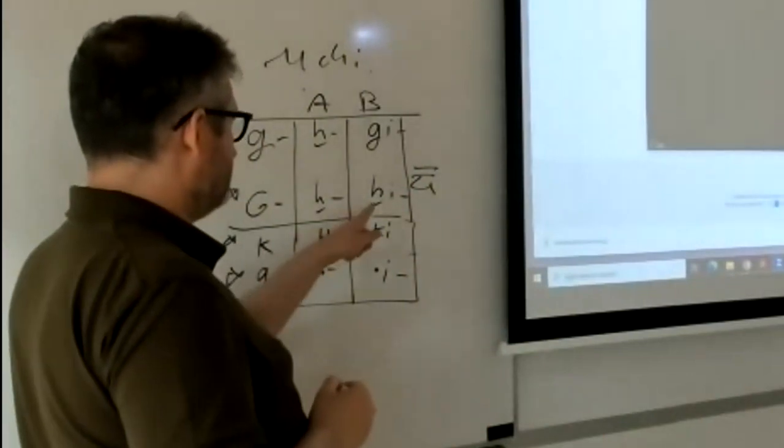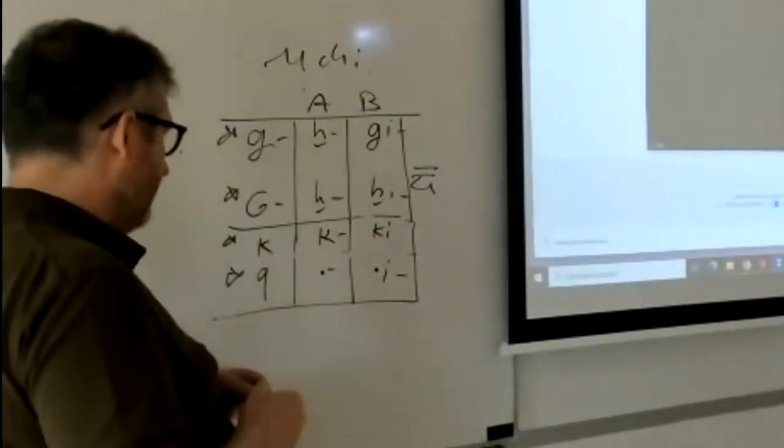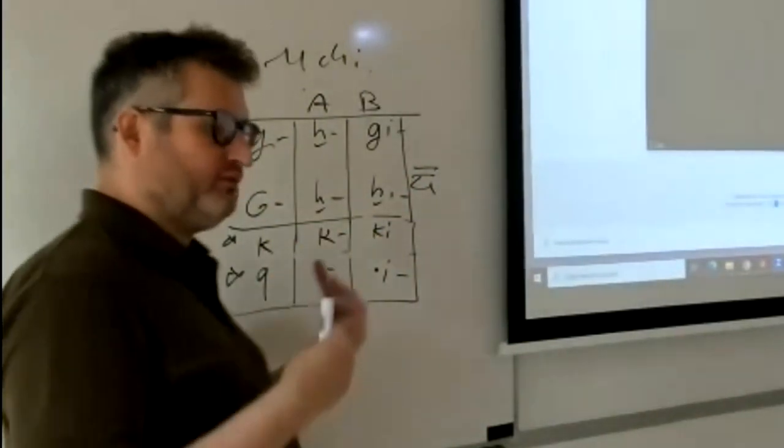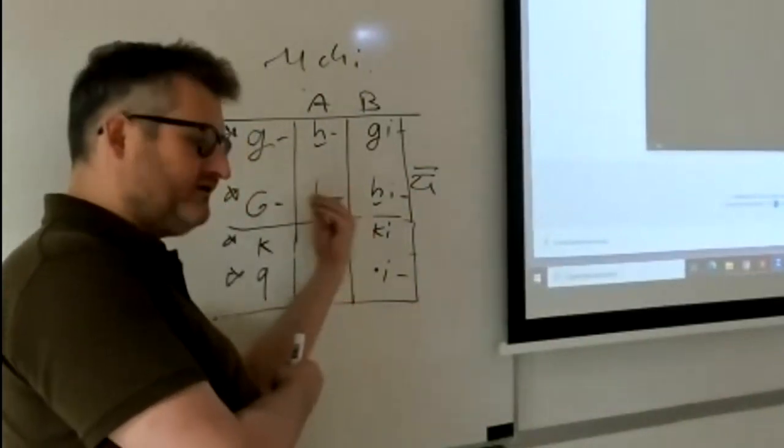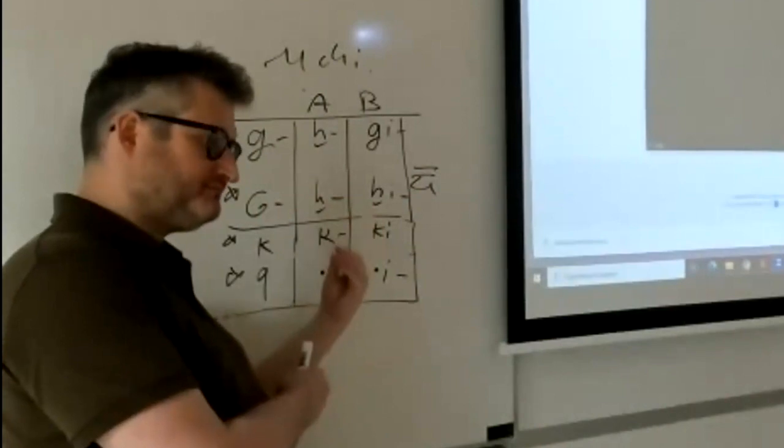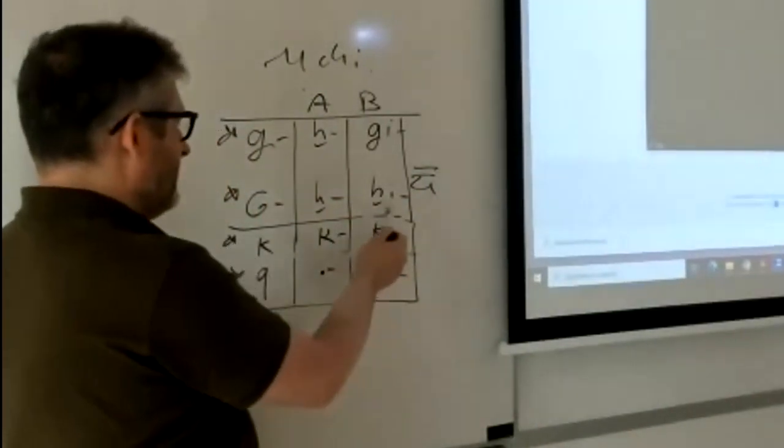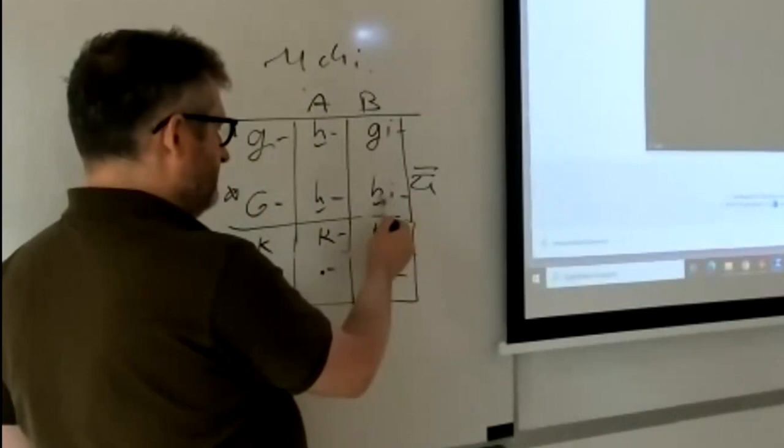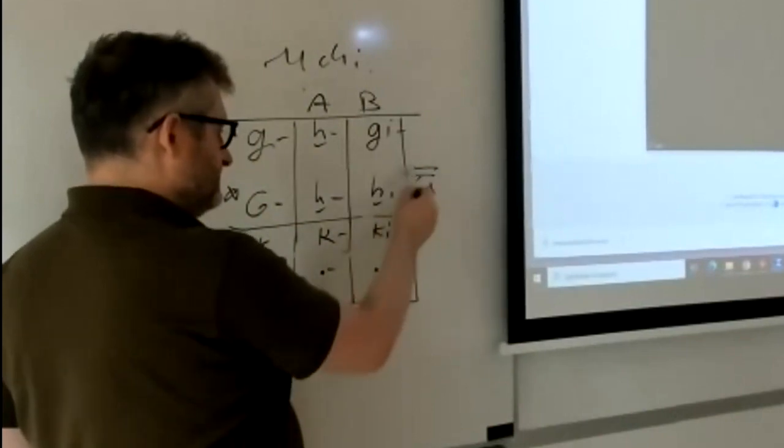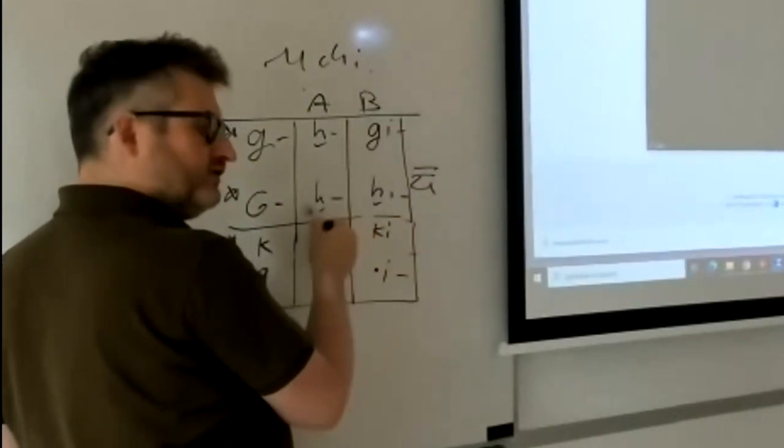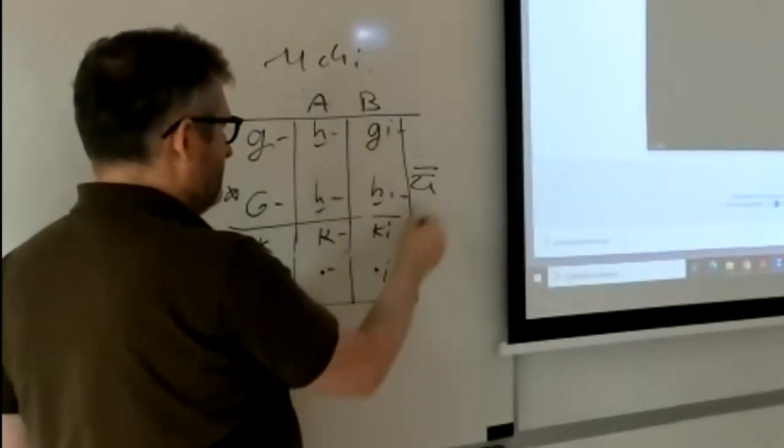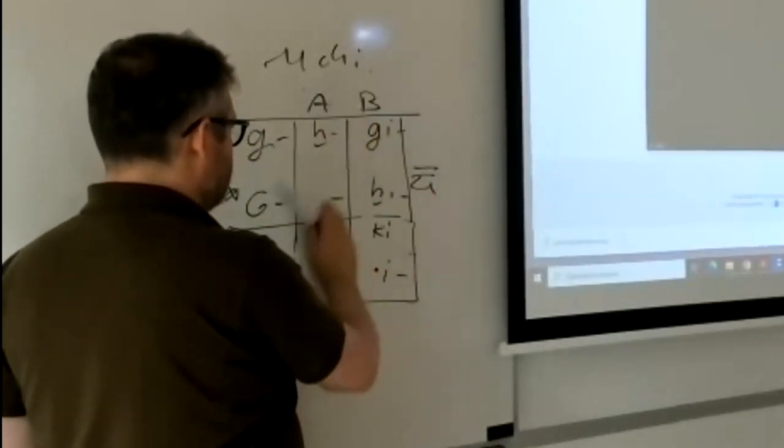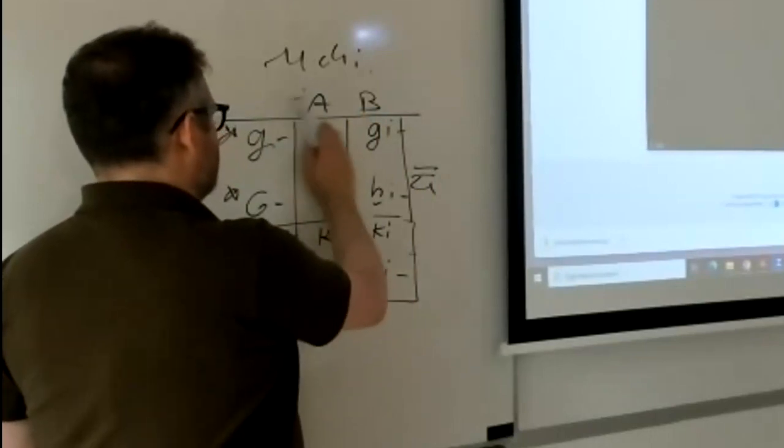So yeah, so what I'm trying to say is, on the one hand, from the perspective of Middle Chinese phonology, you would say that this initial and this initial are in complementary distribution, right? Because this one's in Type A and this one's in Type B. You can say these merge here and write it like this.